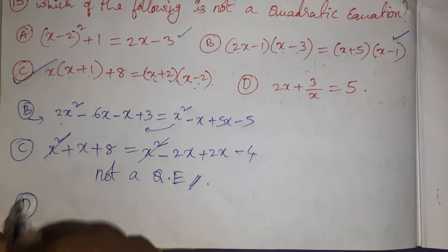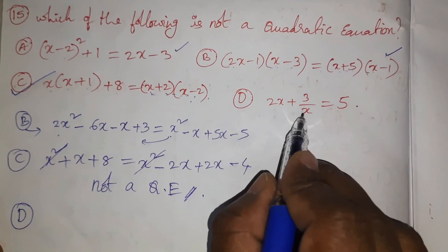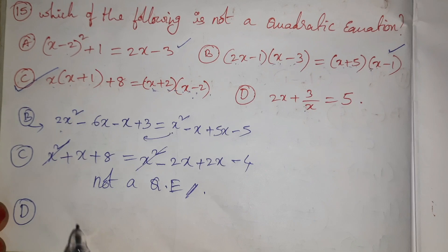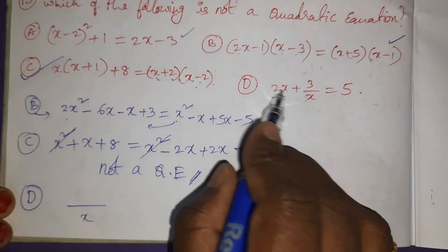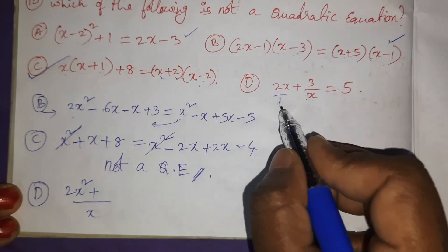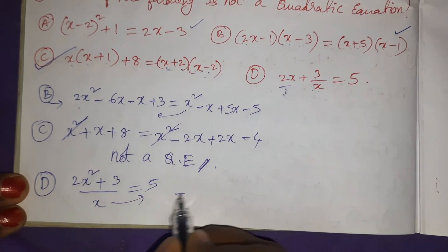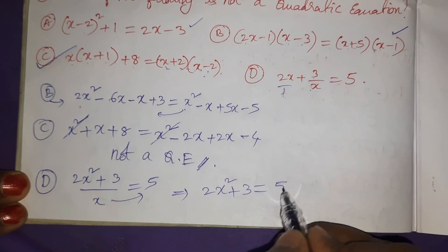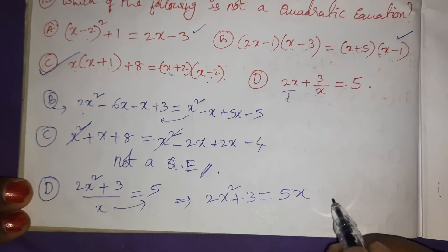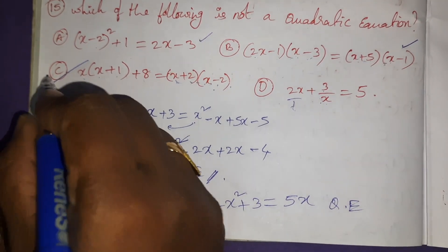Now coming to the D bit: LHS is fraction addition, so we have to do LCM. x × 1², LCM is x. Cross multiplication: 2x² + 3 = 5x. 2x² + 3 = 5x, so it is a quadratic equation. So the answer is C.